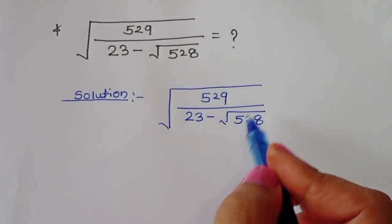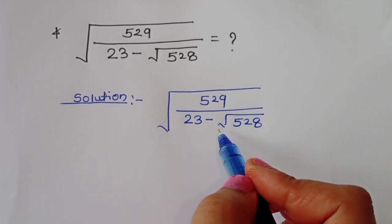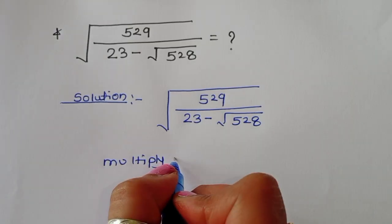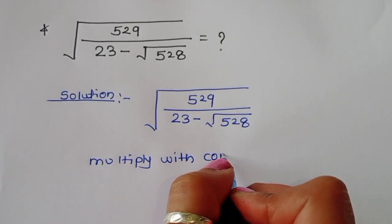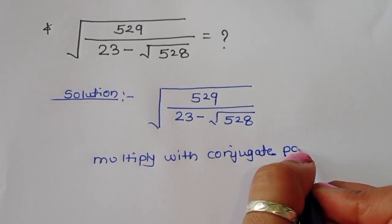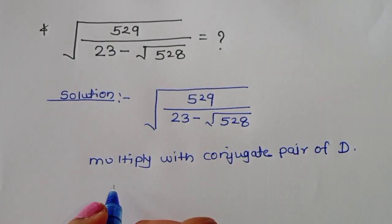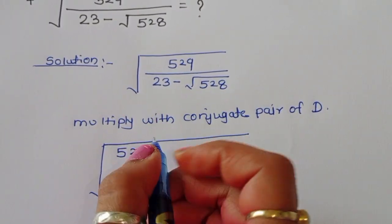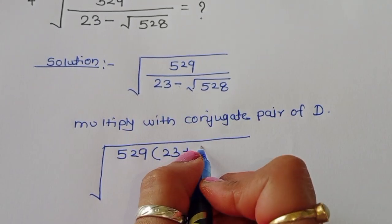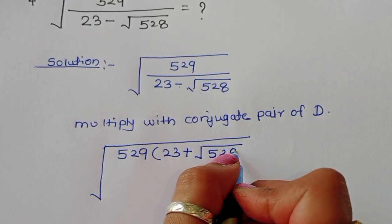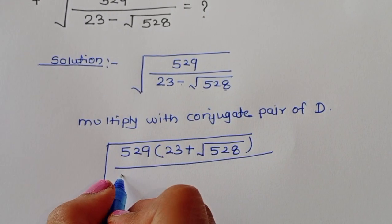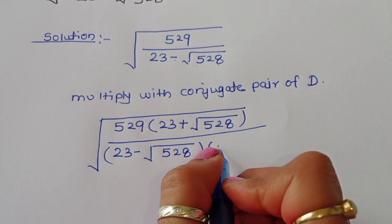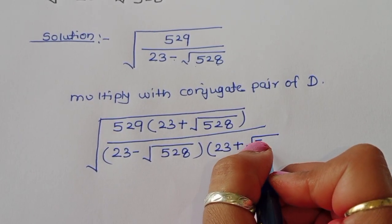To simplify this, we can multiply with the conjugate pair of the denominator, that is 23 plus √528. So we multiply by (23 plus √528) in both numerator and denominator.